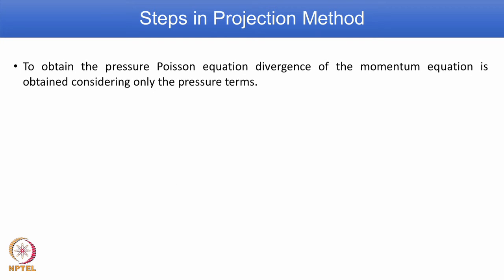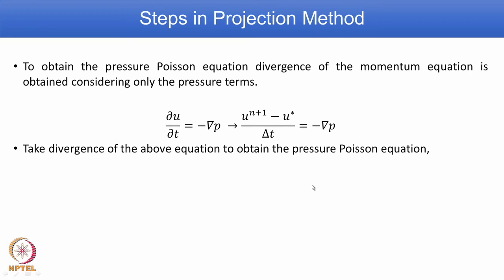To obtain the pressure Poisson equation, the divergence of the momentum equation is taken considering only the pressure terms. So ∂u/∂t = −∇p implies (u^(n+1) − u*)/Δt = −∇p. Taking the divergence of the above equation gives the pressure Poisson equation: −∇²p on one side and the source term on the left side.